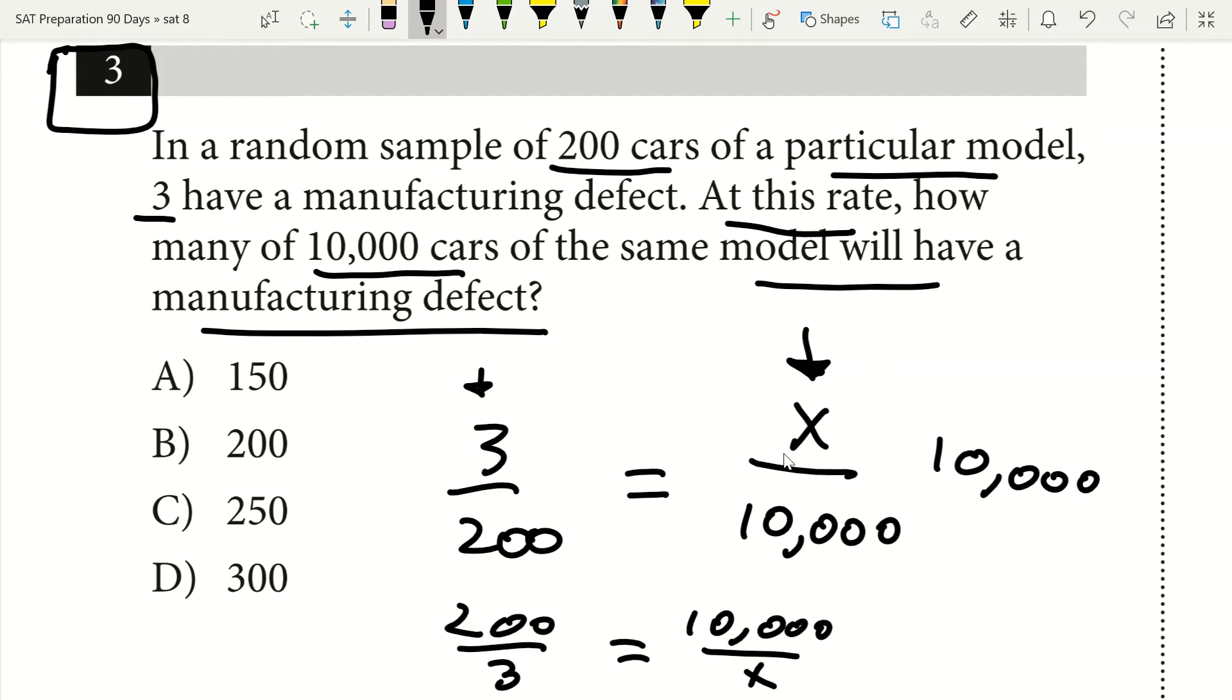When I multiply each side by 10,000, I'm left with x. All I had to do is multiply each side by 10,000 to get my answer. Now I have three times 10,000 over 200. I plug that in my calculator, and that's going to give me 150. So x equals 150, and my answer is A.